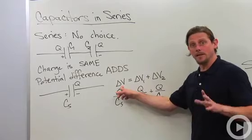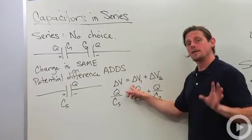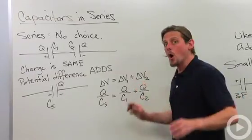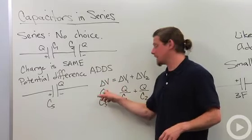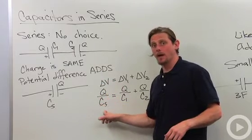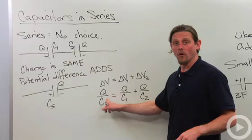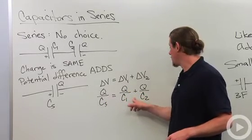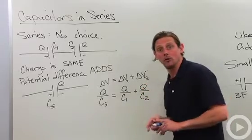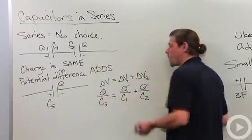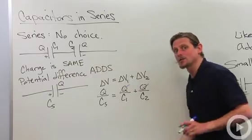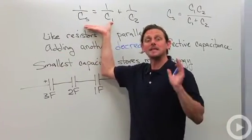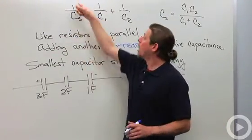So we'll do delta V, potential difference equals potential difference across the first one plus potential difference across the second one. Now, with capacitors, potential difference is charge divided by capacitance. So we'll have Q over capacitance series equals Q over capacitance one plus Q over capacitance two. At this point, since the charge is the same, we're going to cancel him out.